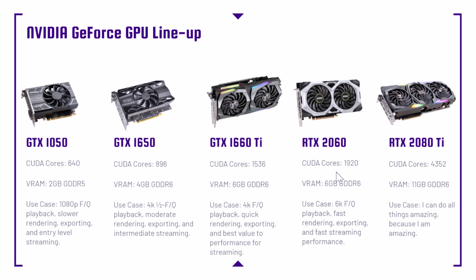The RTX 2060 with 1920 CUDA cores and 6 gigs of VRAM is great for 6K full quality playback, fast rendering, exporting, and fast streaming performance. The RTX 2080 Ti with 4352 CUDA cores and 11 gigs of VRAM can do everything amazingly — but the real use case for video editing is crazy 8K RED footage with super fast rendering times, or large complex motion design projects. For non-gamers, it's hard to justify the cost otherwise.